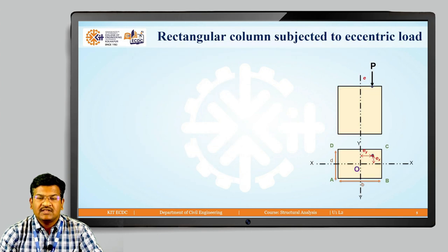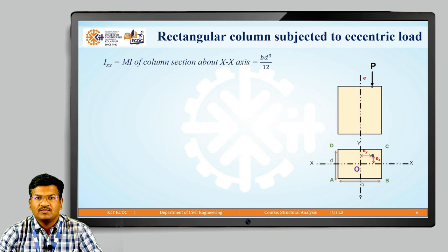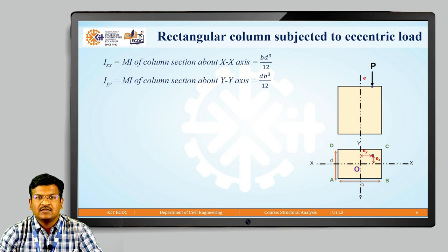These are the terms required during bending stress calculation. We also require the moment of inertia about both axes. The moment of inertia of the rectangular column section about the X-X axis is I_xx equals B D³ by 12. Similarly, the moment of inertia about the Y-Y axis is I_yy equals D B³ by 12.